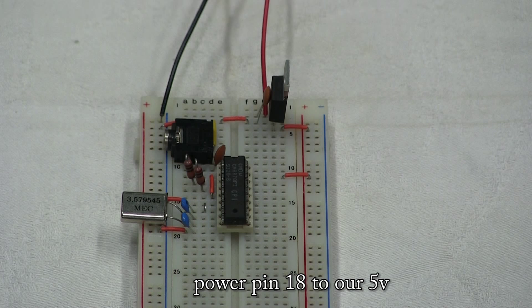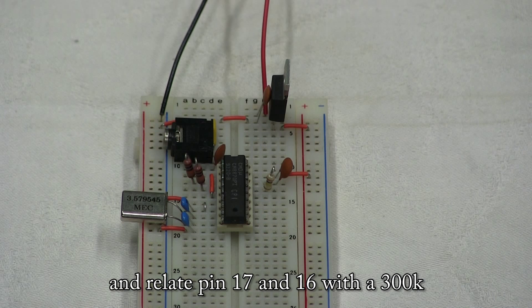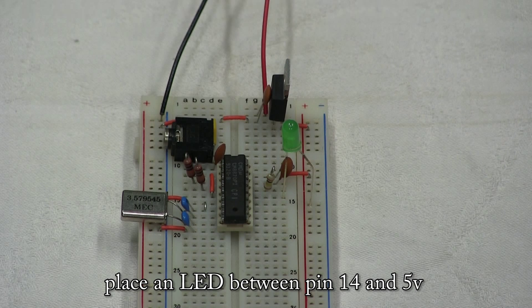Place the crystal between pin 7 and 8, and a 22pF. Power pin 18 to 5V. Relate pin 17 and 18 with a 0.1uF cap, and relate pin 17 and 16 with a 300k. Place an LED between pin 14 and 5V.